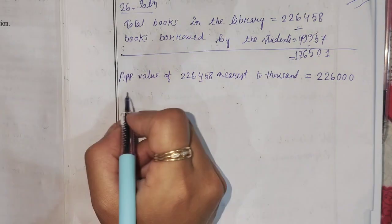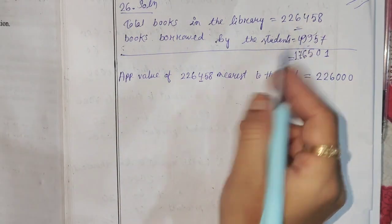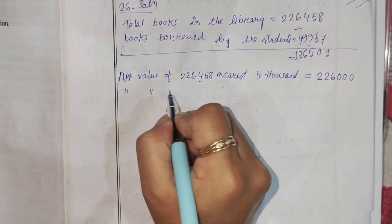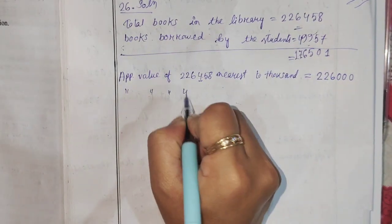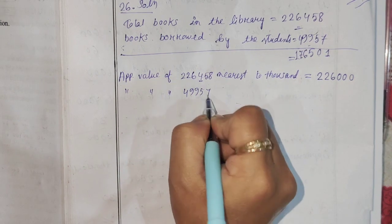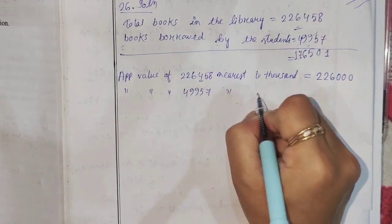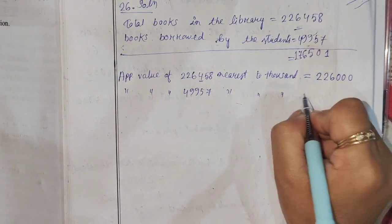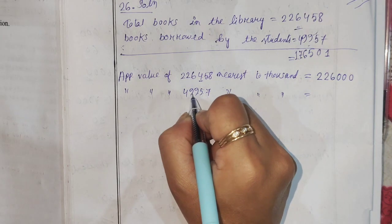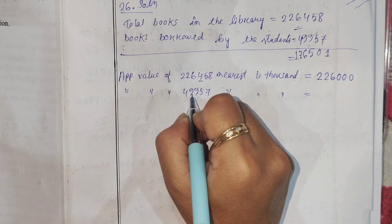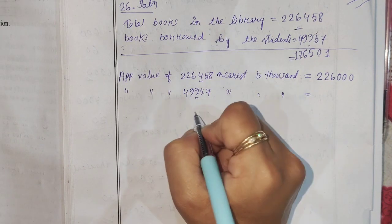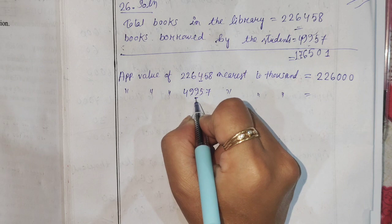Next, the approximate value of 49,957 nearest to 1,000 is equal to 50,000.